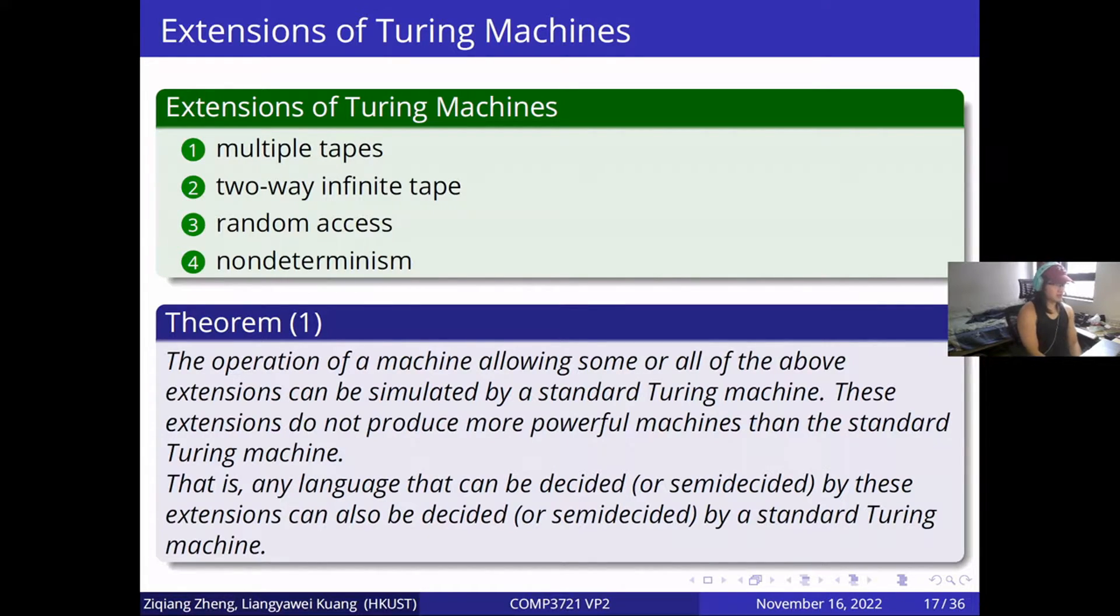The operation of machine allowing some or all of these extensions can be simulated by a standard Turing machine. These extensions do not produce more powerful machines than the standard Turing machine. Language that can be decided or semi-decided by these extensions can also be decided or semi-decided by a standard Turing machine.